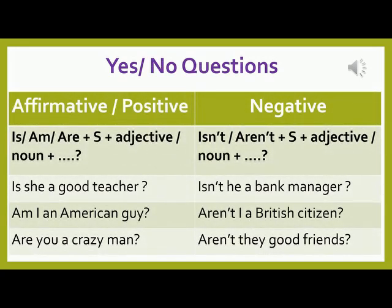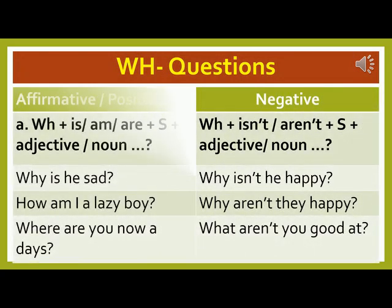Yes-no question of Structure 2 — Affirmative: Is or am or are + Subject + adjective or noun. Examples: 'Is she a good teacher?' / 'Am I an American guy?' / 'Are you a crazy man?' Negative: Isn't or aren't + Subject + adjective or noun. Examples: 'Isn't he a bank manager?' / 'Aren't I a British citizen?' / 'Aren't they good friends?'